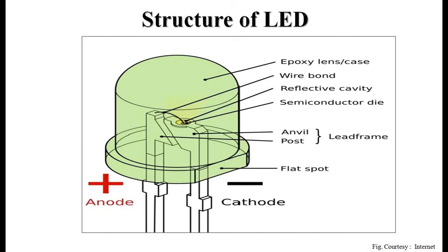The structure of an LED includes two electrodes — anode and cathode — along with an epoxy lens or case, a wire bond between anode and cathode, a reflective cavity, a semiconductor die, and lead frames.